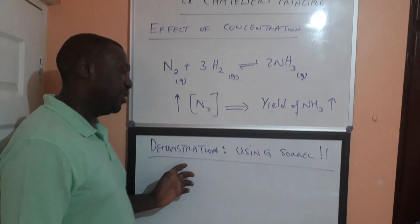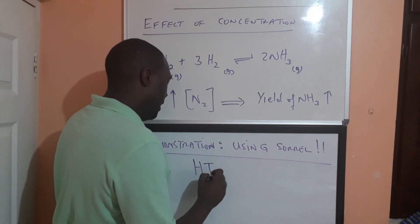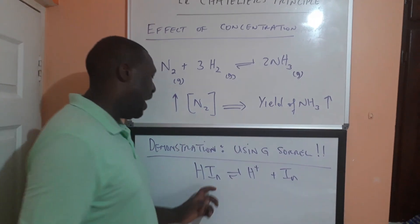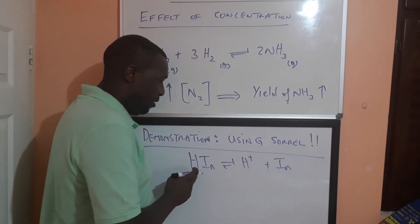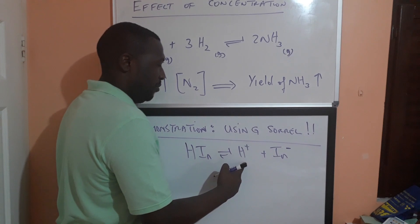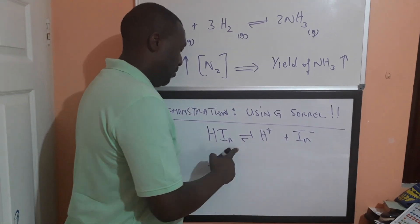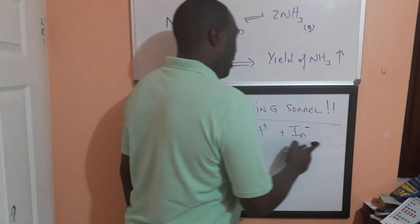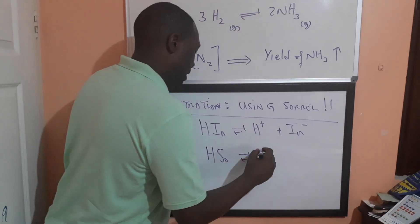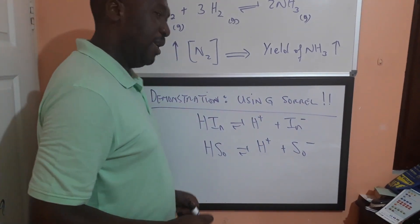Now we are going to demonstrate that using sorrel. Sorrel is a type of indicator, and indicators are weak organic acids. I'm using In⁻ for the anion part of the indicator and H for the acid. When they dissociate, they give you H⁺ ions and the ionic form of the indicator. Generally, the molecular form has one color and the ionic form has a different color. For sorrel: HSo dissociates to give H⁺ and So⁻.